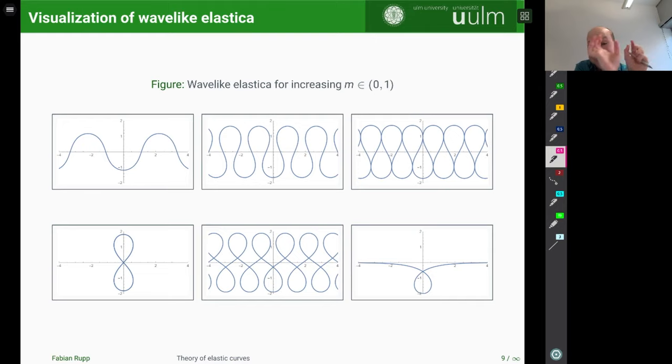And as m increases even further, there will be one specific value of m where suddenly all these bumps overlap in precisely to give precisely one curve, if you want, or yeah, one shape, which is this figure 8 shape on the bottom left down here. And this is very important for later, because we know that this actually defines a closed curve now. So here the value of m is approximately 0.83, and this is called the figure 8 elastica.